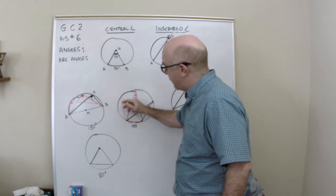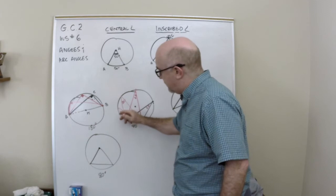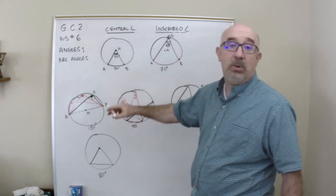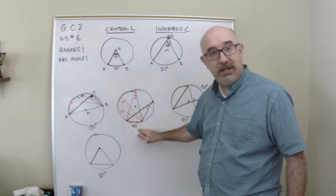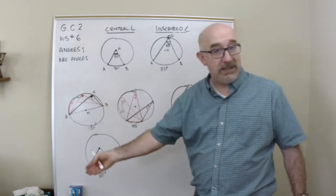This is 20. This is 20. And I can make a whole lot of those inscribed angles. They'll all be equal because they're all sitting on the arc of 40. So they'll all be 20.